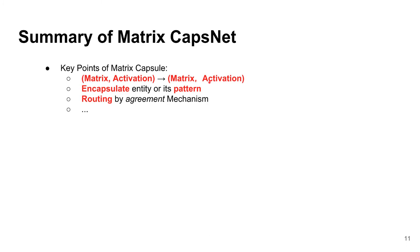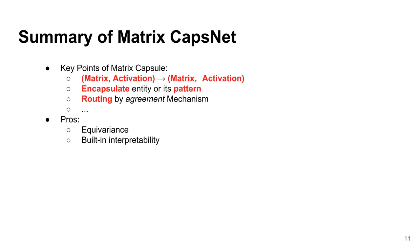There are many things we didn't talk about, such as the exact formula for the EM routing — you can read the paper. This talk was just to help you understand what the matrix capsule is. For the advantages: the experiments show it brings equivariance, it brings interpretability, and it has robustness against adversarial examples.